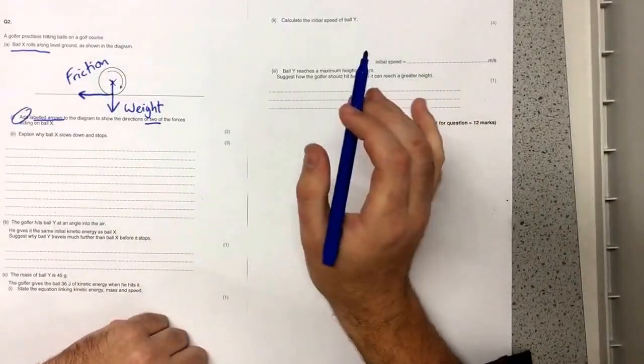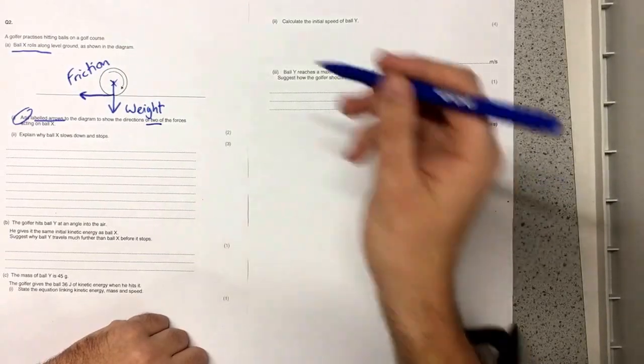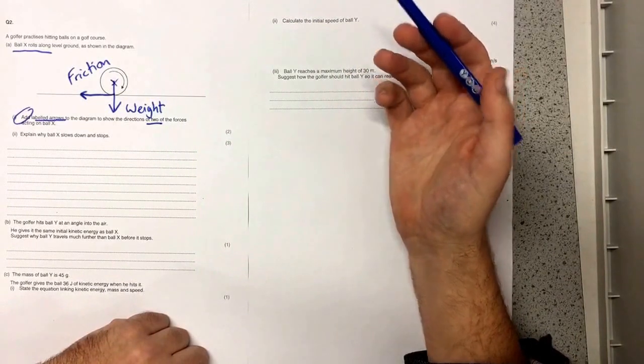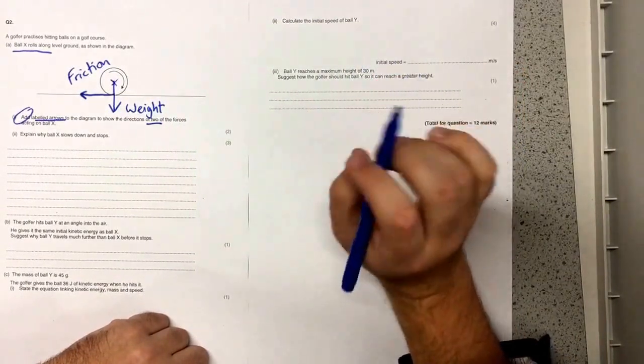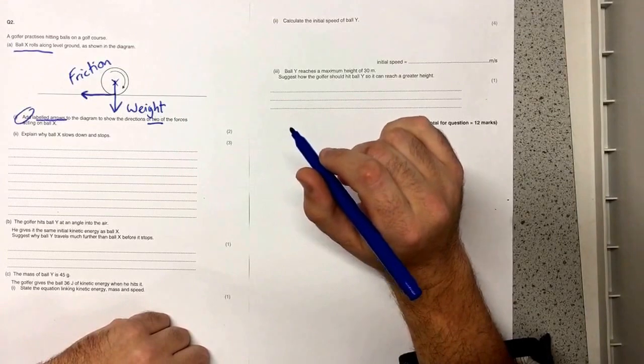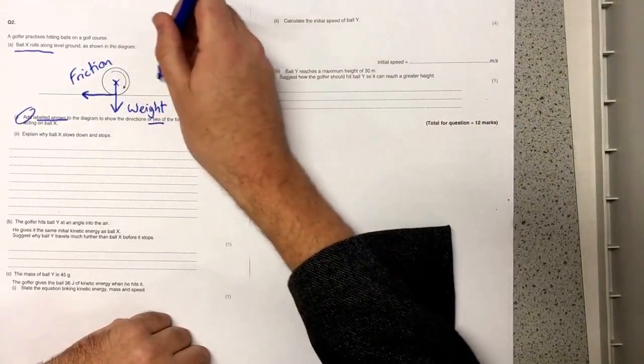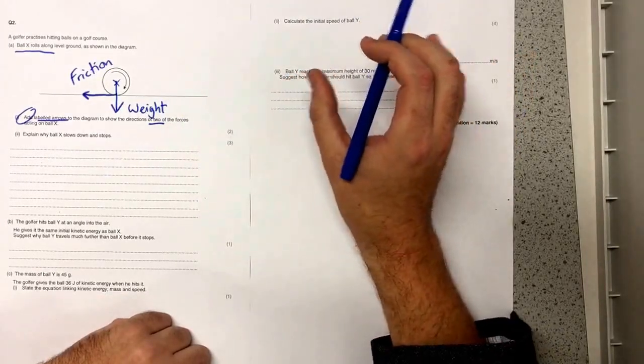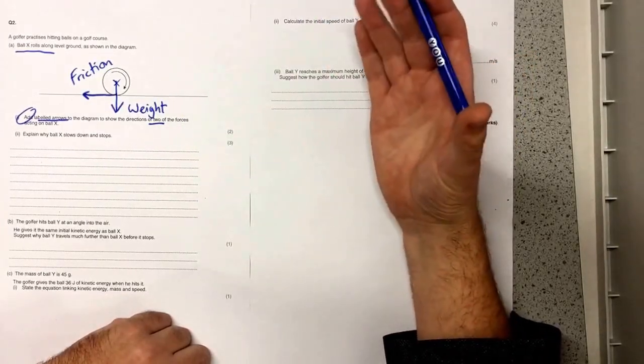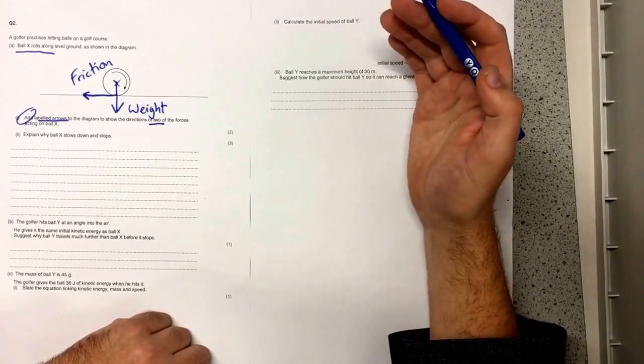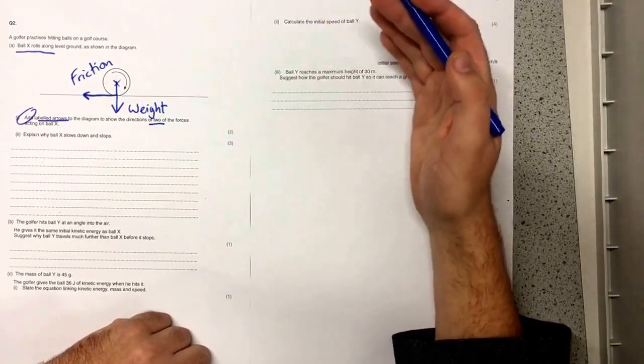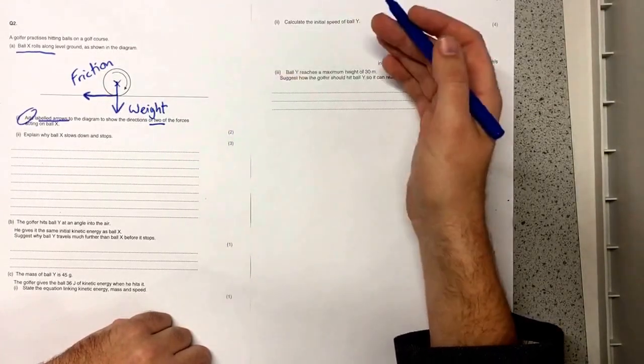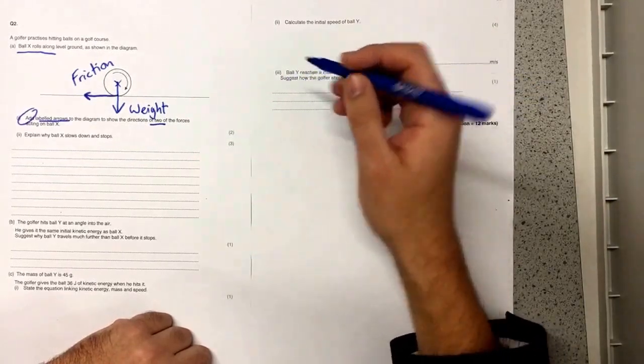Now there are lots of other forces that we could add in. We could add in air resistance coming from the centre of the ball acting in the same direction as the friction but what most students get wrong in this question is they try and add a force going in the direction the ball is moving but this is completely wrong. The ball doesn't have a jetpack on it pushing it forwards it's just rolling along the ground. As Newton's first law states an object will continue in a state of constant motion unless acted upon by an external force. You don't need a force pushing it forward.